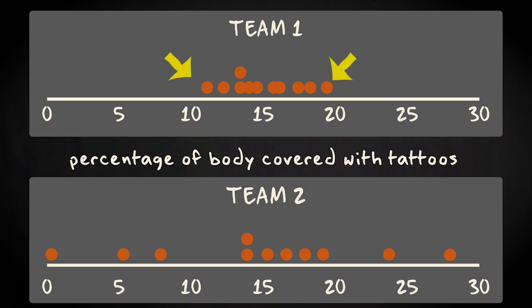The players of team 1 have covered about 10 to 20% of their bodies with tattoos. In the second team, the players differ much more from each other in terms of their tattoo density. The percentage ranges from 0 to about 30%. Thus, these teams strongly differ from each other.